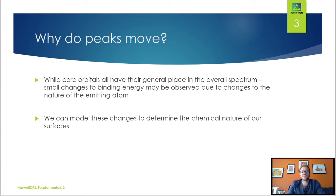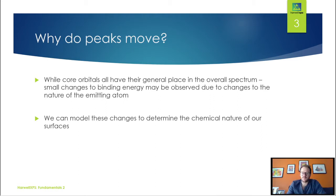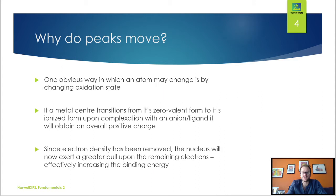So why do peaks move? We saw in the first video that the binding energy of different orbitals is different — for example, a gold 4F versus a gold 4D. But if we look more closely at individual peaks, we can see subtle slight changes to these binding energies depending on the chemical nature of the emitting atom, and we can use these to model our data and get more information about the chemical nature of our surfaces.